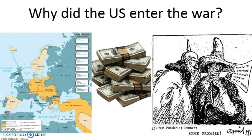You also have the Russian Revolution and the withdrawal of Russia from the Allied side. But of course the number one cause would be the resumption of unrestricted submarine warfare on behalf of the Germans. Remember that the Lusitania was sunk in 1915. You also have the Sussex being sunk. Those were passenger ships.